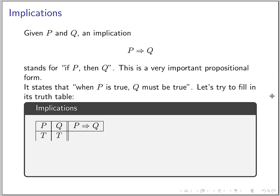Let's look at another important connective: the implication. This stands for 'if p then q.' It's very important in propositional forms and sometimes a little confusing. Let's figure out its truth value using a truth table. When p is true and q is true, p implies q is true — it says if p then q, so p is true and q is true, which is consistent with p implies q. Now if p is true and q is false, we cannot say the sentence is true, because this sentence guarantees that if p is true then q must be true — but q is false. So in this case, p implies q is false.